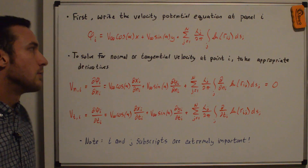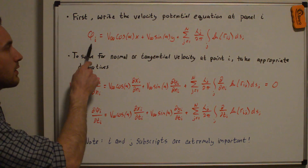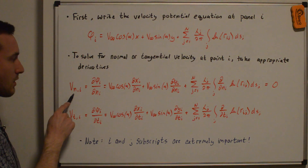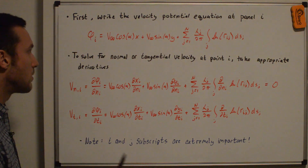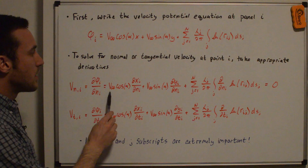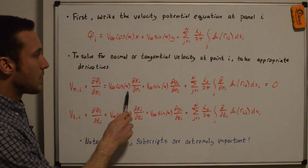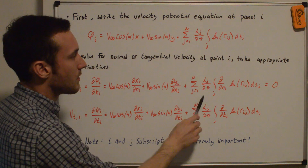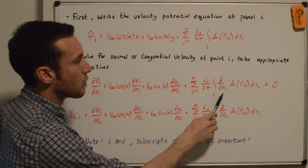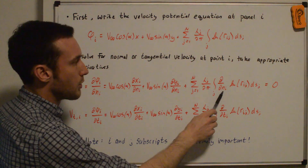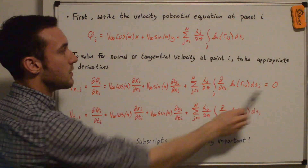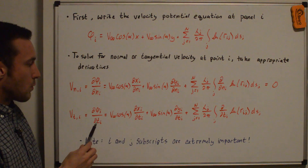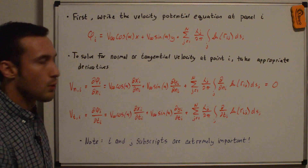Note that this one equation for phi_i includes every single source panel strength because of the summation. To solve for the normal or tangential velocities at point i, we take the appropriate derivatives of the velocity potential equation with respect to either the normal or the tangential direction. For the normal velocity at point i — the control point — we have the partial derivative of phi_i with respect to n_i. This whole equation is set equal to zero because the normal velocity at the control point is zero. For the tangential, we have the same expression but replacing d/n_i with d/t_i.